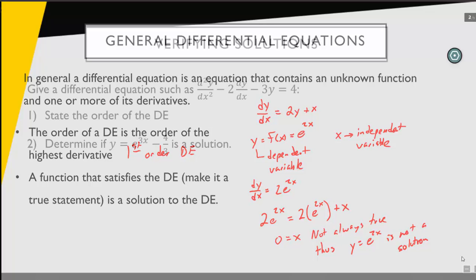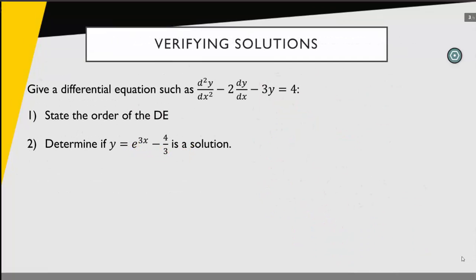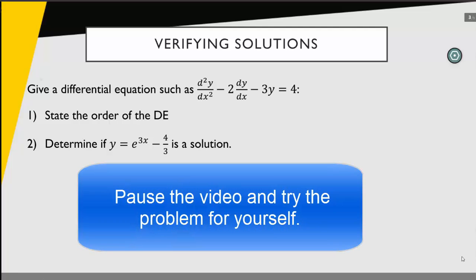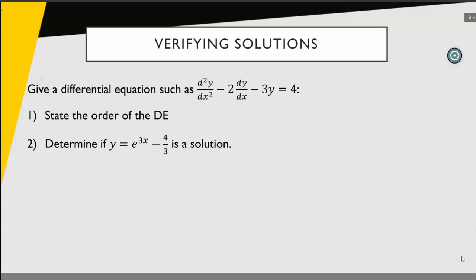Let's take a look at another problem. I would encourage you at this time to pause the video and see if you can work through this problem on your own. Now let's take a look at our solution. The first part says state the order of the differential equation. I have a first derivative and a second derivative here, so this is a second order differential equation. Next, we need to determine if y equals e to the 3x minus 4/3 is a solution. To do that, we'll take the first and second derivative and plug them into our differential equation to see if we get a true statement.